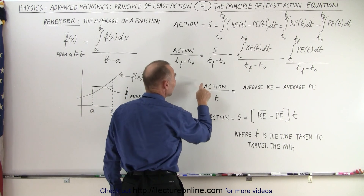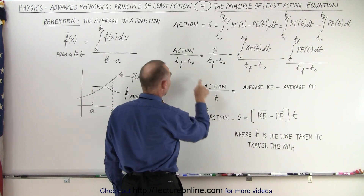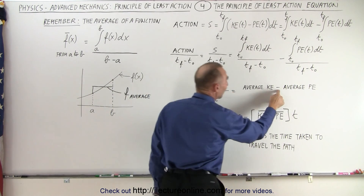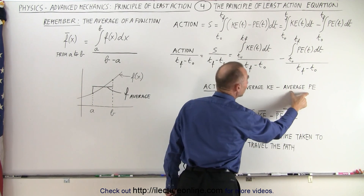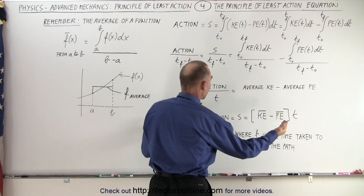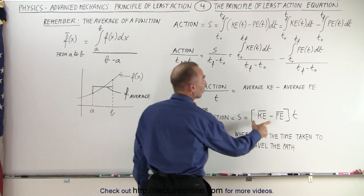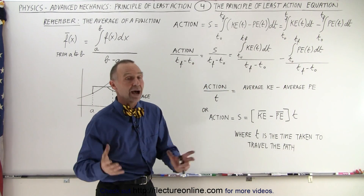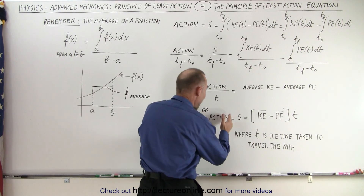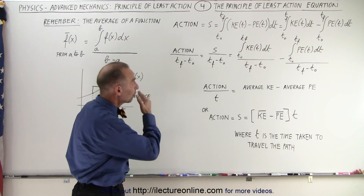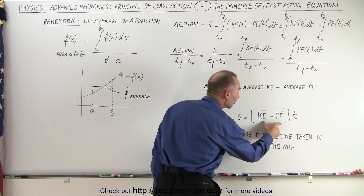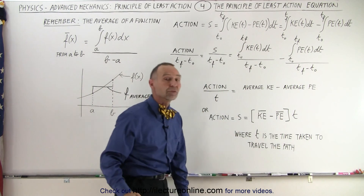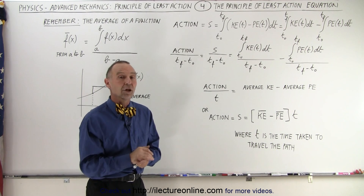So the action divided by the time it took to travel the path — where t represents t-final minus t-initial — is equal to the difference between the average kinetic energy and the average potential energy. If we multiply both sides by t, then the action equals the difference between the average kinetic energy and the average potential energy times the time of the path taken. A minimum action — the principle of least action — means that the difference between the average kinetic energy and the average potential energy must be a minimum, for whatever time it took to travel along that path.